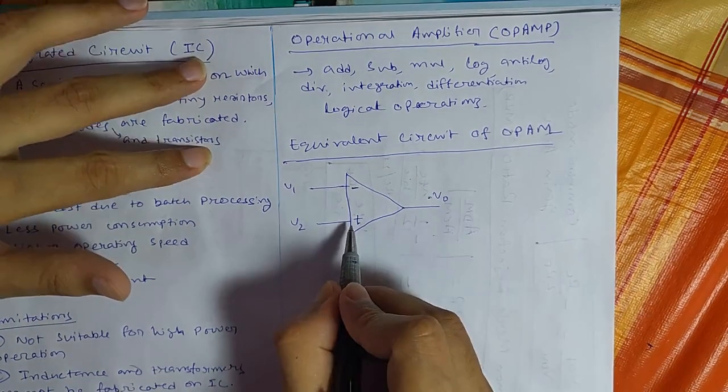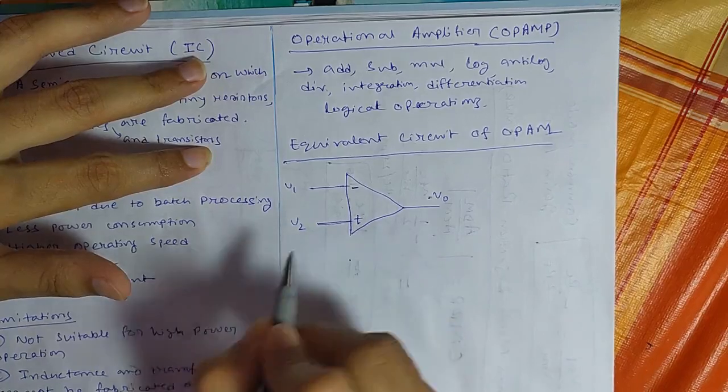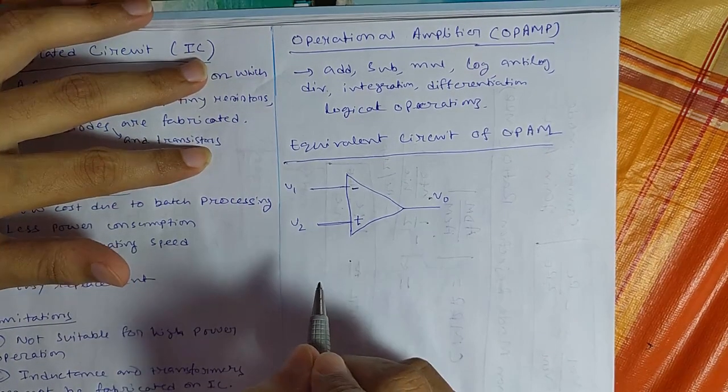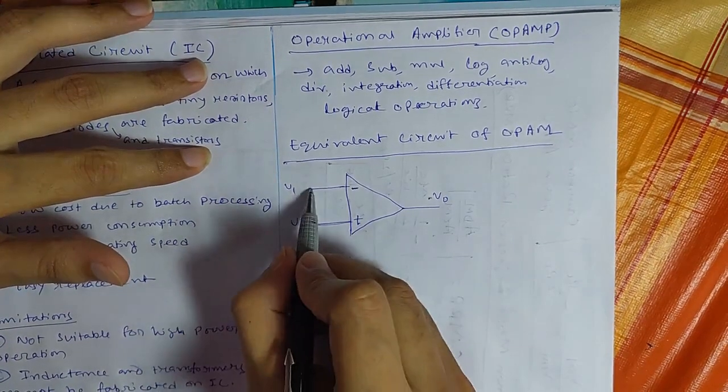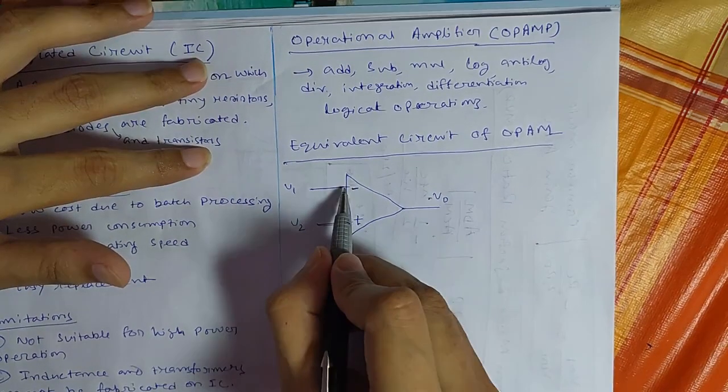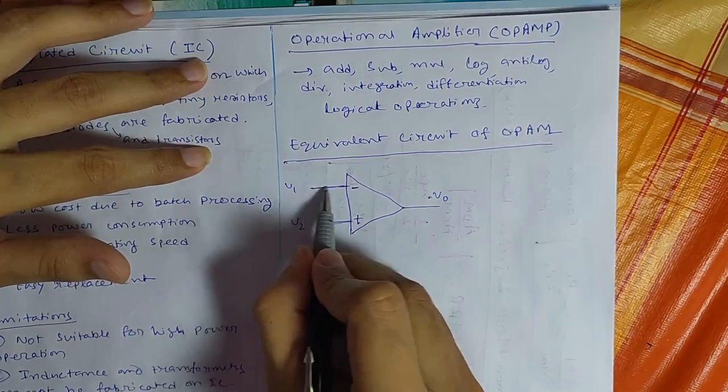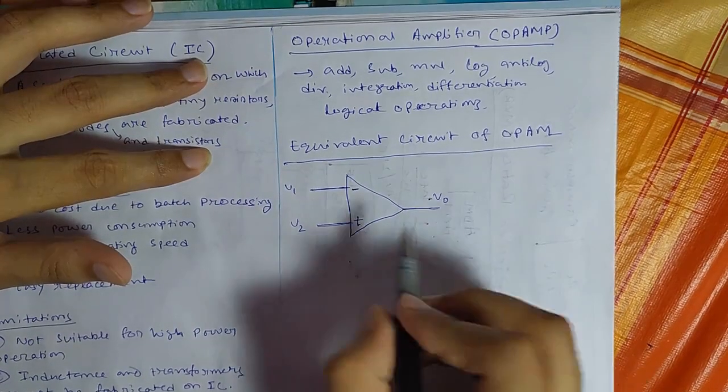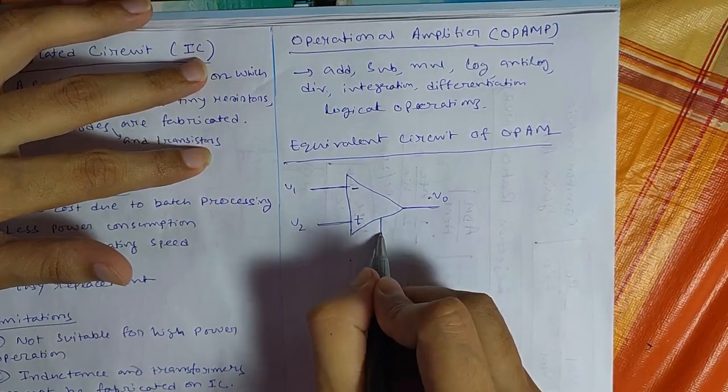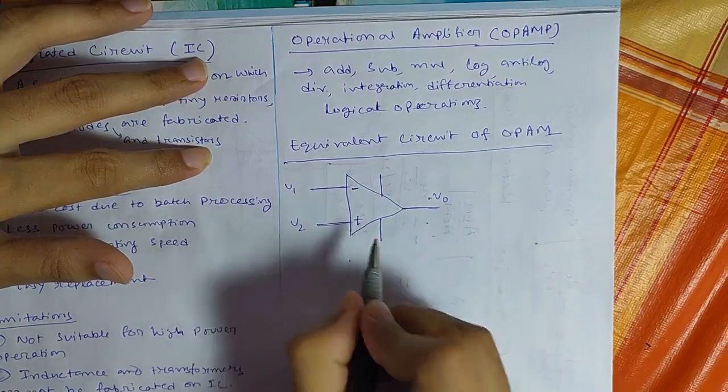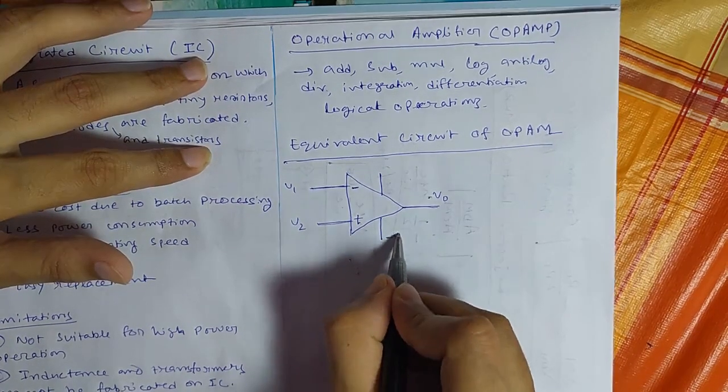So meaning behind this plus is that this terminal is known as non-inverting terminal. Minus sign, there is a minus sign associated with this terminal. So that is known as inverting terminal. It is output. There will be supply voltages. So that will be minus VEE.